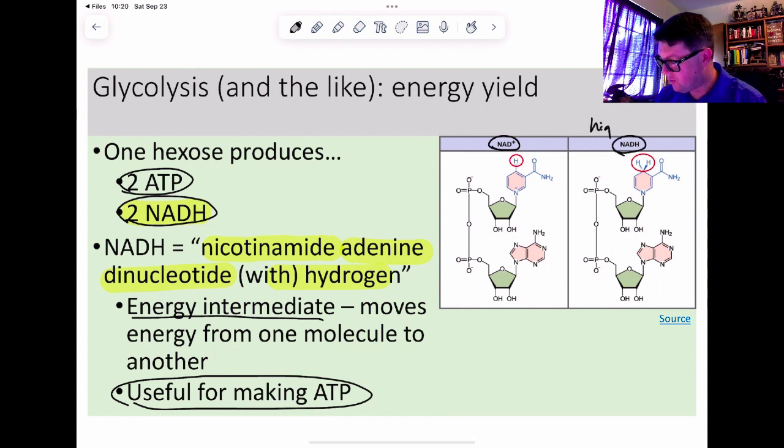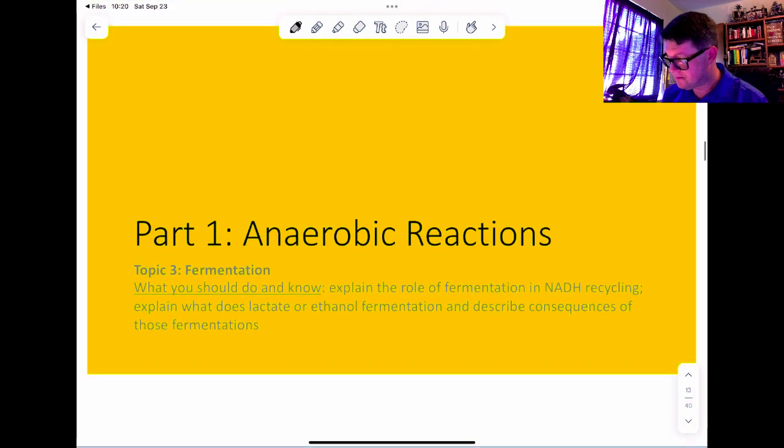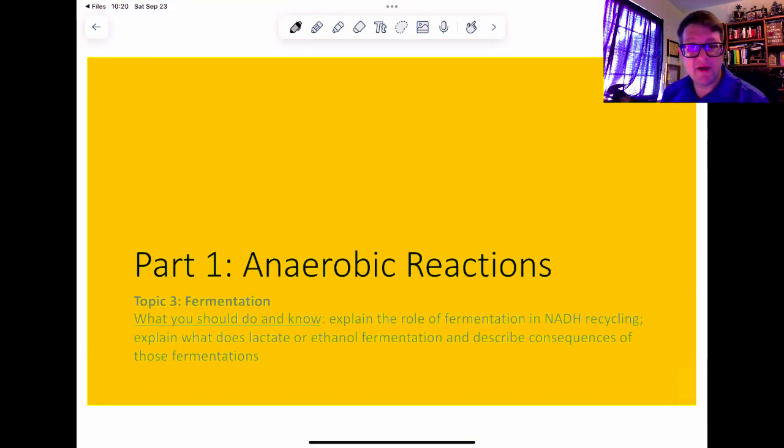When we look at it, it comes in two forms. NADH is the high-energy form; NAD+ missing that H is the low-energy form. Two ATP isn't a lot, so clearly we need to do something more than just this. What we're going to talk about next is what happens when we start to run out of NAD+, because we need NAD+ to make NADH.